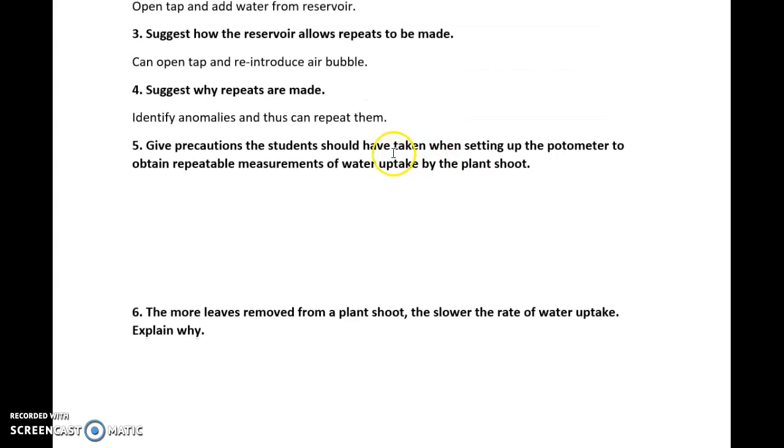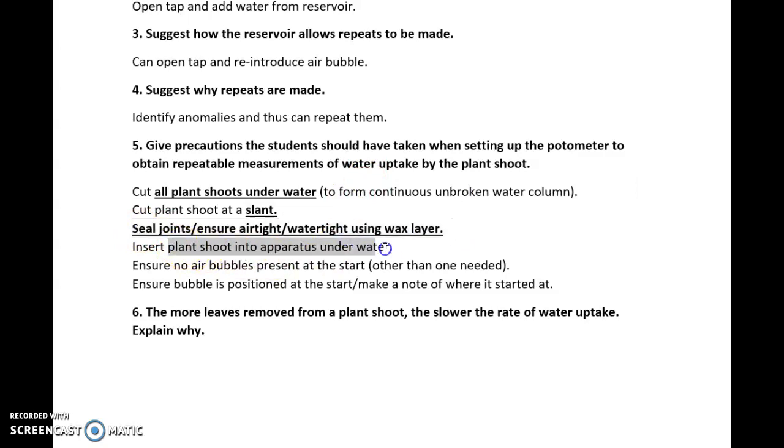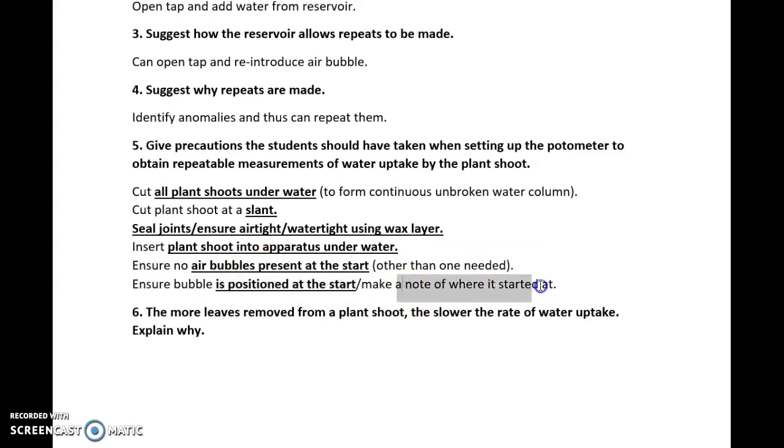Give precautions the student should have taken when setting up the potometer to obtain repeatable measurements of water uptake by the plant shoot. This is quite a nice and easy question. Common list: make sure you cut them all underwater to get a continuous unbroken water column. Make sure you're cutting it at a slant and keep that consistent. Seal the joints using wax. Insert the plant shoot into the apparatus underwater. Ensure that no air bubble is present at the start, the one obviously needed, and ensure that it's positioned at the start, or make a note of where it was and then look at the difference between that.